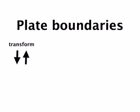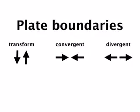Which brings us to those boundaries themselves. All of plate tectonics comes down to what happens when two plates interact with one another. It really boils down to three types of interactions — three types of plate boundaries. The first is a transform boundary, which occurs when plates slide past one another. We also have convergent boundaries, where plates collide, and divergent boundaries, where they drift apart. You should be familiar with each of these and the kinds of things we see at each of them.